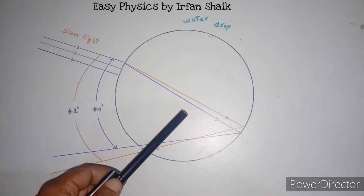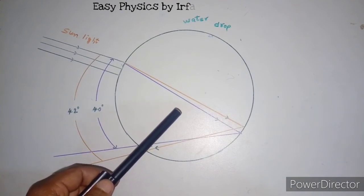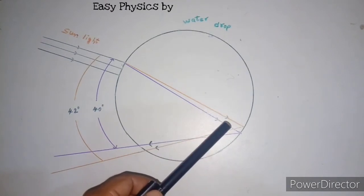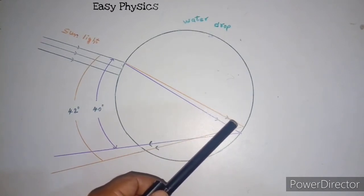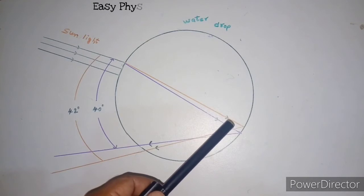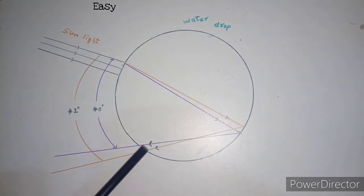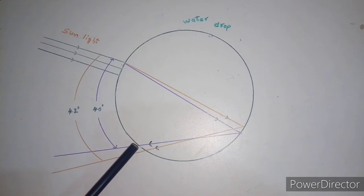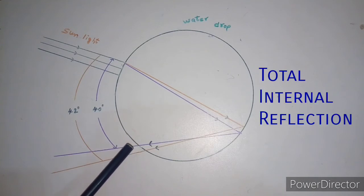The red color is deviated the least. Reaching the opposite side of the drop, each color is reflected back into the drop again because of total internal reflection, arriving at the surface of the drop.